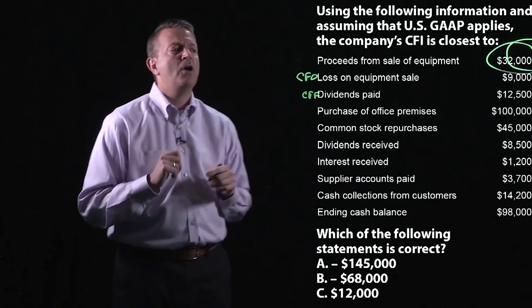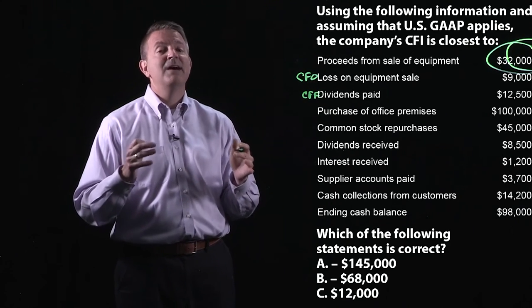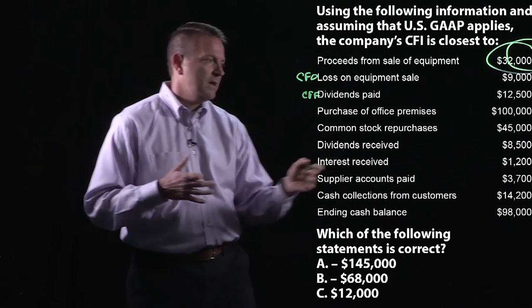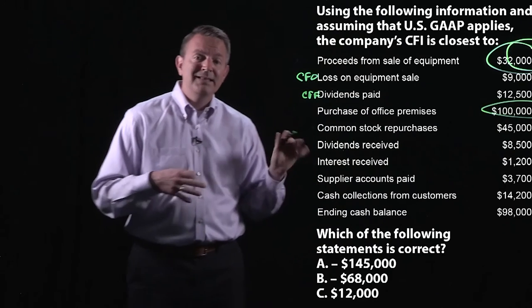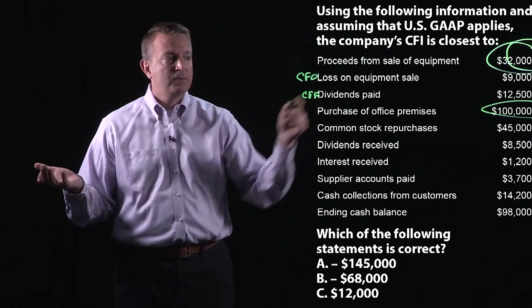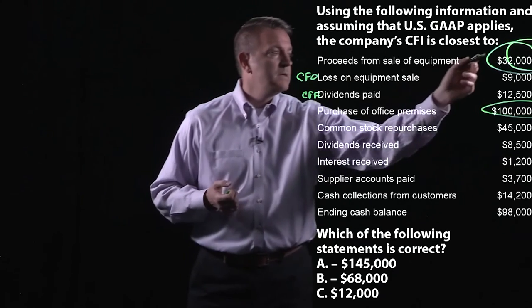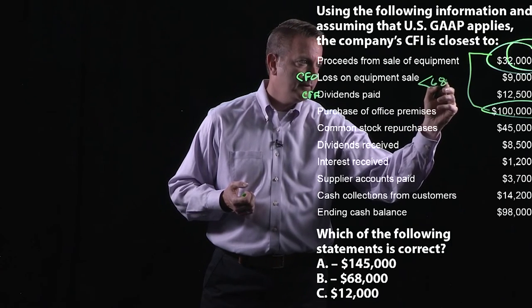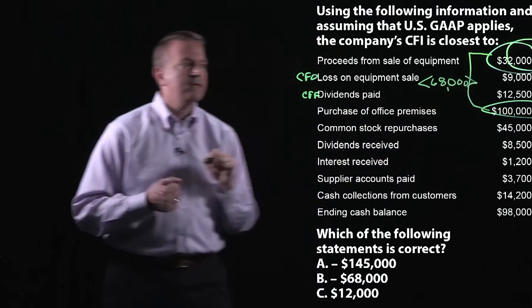What about the purchase of office premises? That's a long-term investment and something that's going to give us value going forward. So that $100,000 is going to be money going out. If that's out and the first one — $32,000 — is in, the net of those two items is going to be $68,000 going out. So that's a negative $68,000.